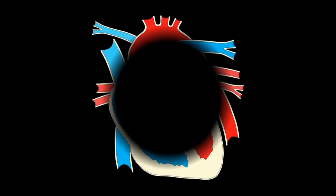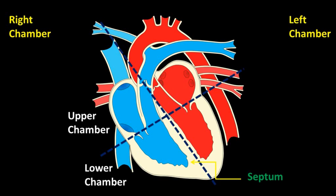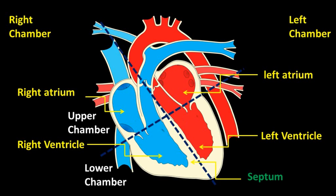Human heart has different chambers to prevent oxygen-rich blood from mixing with blood containing carbon dioxide. It has mainly two chambers: the left chamber and right chamber, separated by the septum — a thin layer of muscles between them. Each chamber is further divided into two: an upper chamber and a lower chamber.